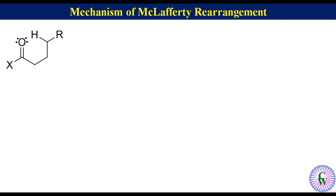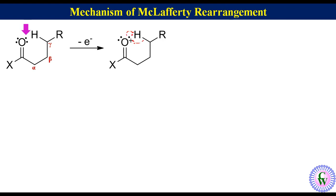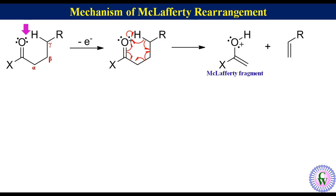Mechanism of McLafferty rearrangement. Let's take a carbonyl compound with this general formula. Label the alpha, beta, and gamma carbons. In this compound, the most loosely bound electrons are the non-bonding electrons of carbonyl oxygen. When there is an electronic bombardment, one of the non-bonding electrons is knocked out to produce this radical cation, also called the parent ion. The gamma hydrogen is abstracted by the oxygen radical, during which a pi bond is formed between the beta and gamma carbon by breaking the bond between alpha and beta carbon. Then breaking of the pi bond of the carbonyl leads to the generation of an enolic radical cation and expulsion of an alkene. This radical cation is called the McLafferty fragment.